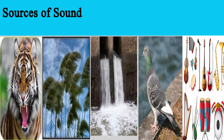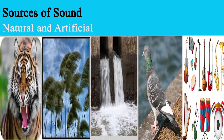We have two main classifications of sources of sound: the natural source and the artificial source. The natural source includes the human voice, animals, a baby crying, wind, river, and boats, etc. While the artificial sources are sounds produced by artificial means using electronic media, like the radio, the television, and of course musical instruments.